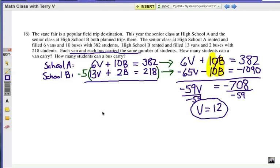Substitute it in to get our second answer. I'm going to use the first equation because it says 6V instead of 13V. Trying to keep my numbers small here. So, 6 times 12 students per van, plus 10B, from the first equation here, equals 382. That'd be 72 plus 10B equals 382.